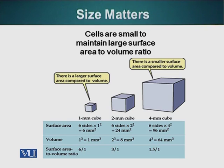Now let's look at a slightly bigger cube — two millimeters on each side. If we calculate the surface area, it becomes 24 square millimeters. Using the same formula for volume, the volume will be two cubed, which is eight. So the surface area to volume ratio is 24 to 8, or simplified, three to one. We have now seen that as the size increases, the surface area to volume ratio decreases, and that is an impediment for cells to be of a bigger size.